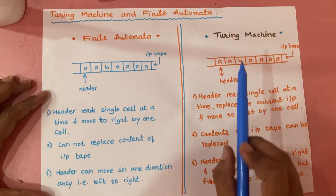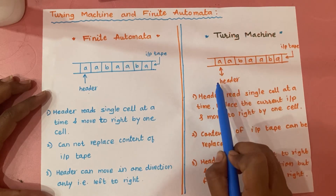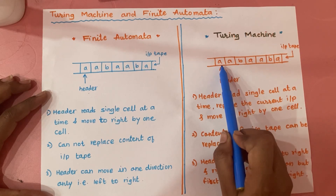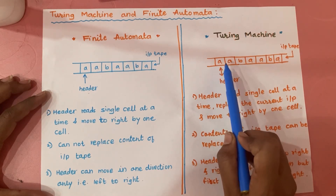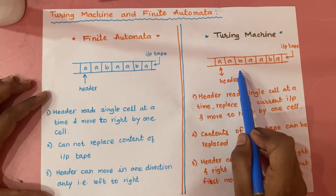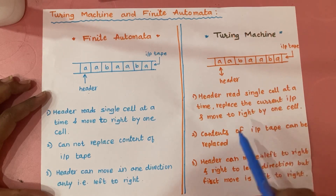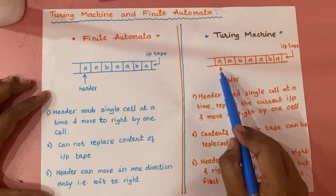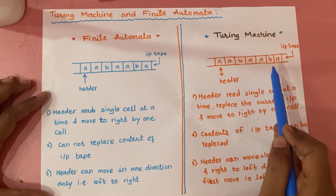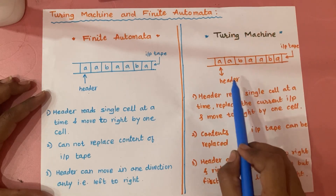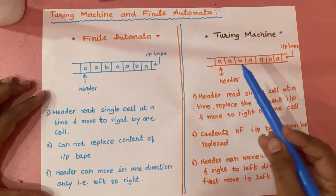While reading a single symbol from the input tape, in case of a Turing machine we have to perform three steps: first, read the current input symbol; second, replace the current symbol by the same symbol or replace it with some other symbol; and third, move to the right by one cell. The contents of the input tape can also be changed, and the header can move from left to right as well as right to left — bidirectional movement of the header is possible.